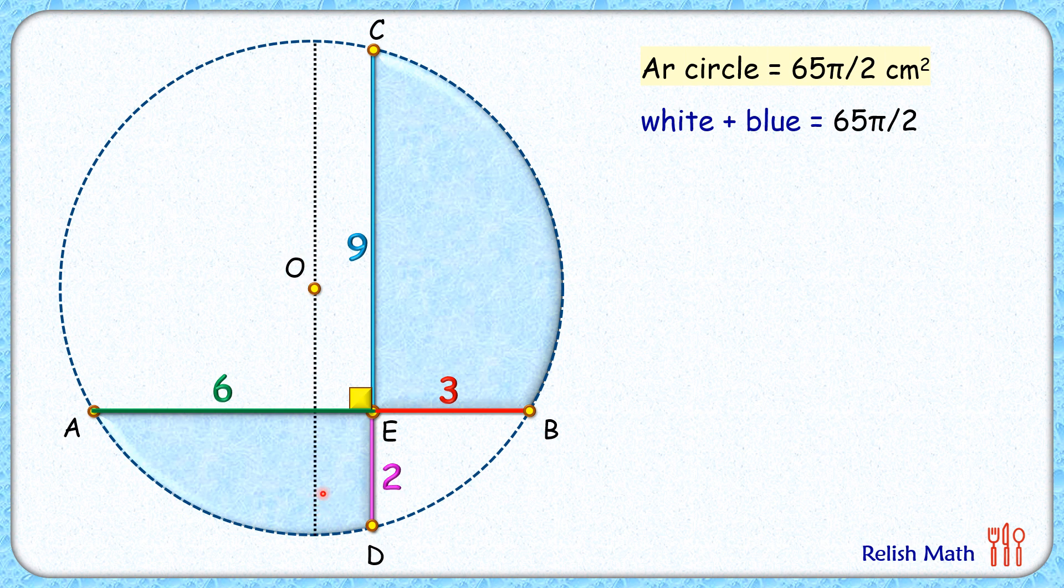We know that the circle is symmetrical across its diameters, so we can draw the mirror image of chord CD on the left side. Same way, if we draw a horizontal diameter, then we can draw the mirror image of chord AB on the top part.